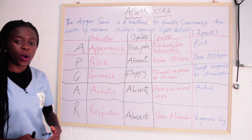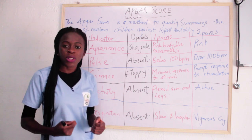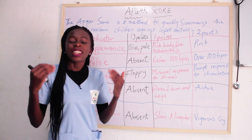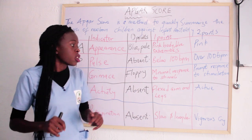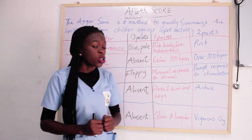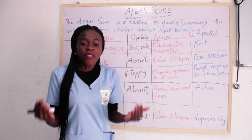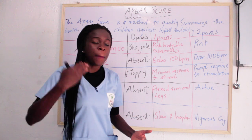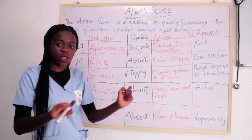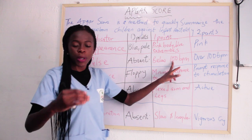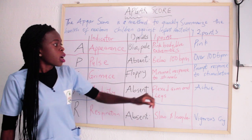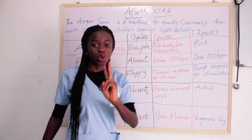Then the second component is P — the Pulse. You check the pulse of the child when the child is born. If you check the pulse and it is absent, you give the baby zero. If the pulse is below 100 beats per minute — you are getting 80, 70, 85 — you give the baby one point. But if it is over 100 beats per minute, you give the baby two points.